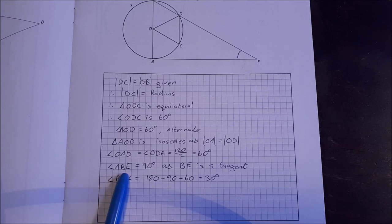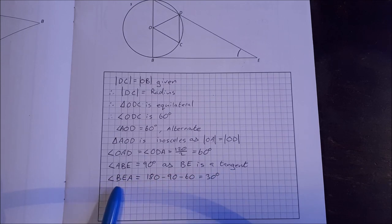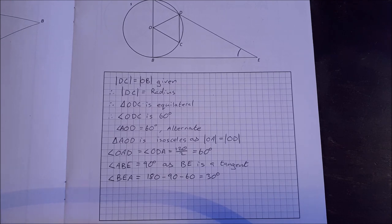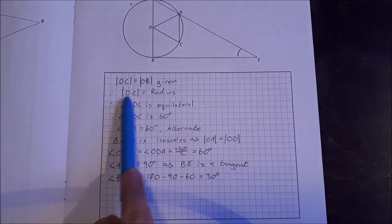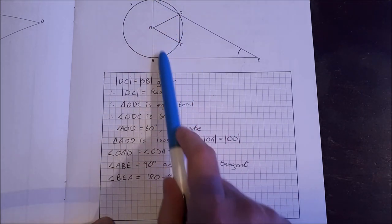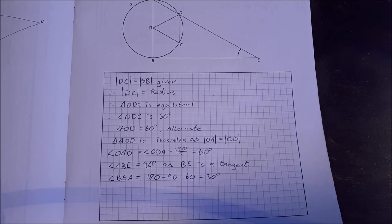The angle ABE is equal to 90, as BE is a tangent. And that means the angle BEA is 180 minus 90 minus 60, which leaves us with 30. If you're unsure about that, just go through step by step and point at each side, each angle, each triangle as you're going through it, and it should make more sense then.